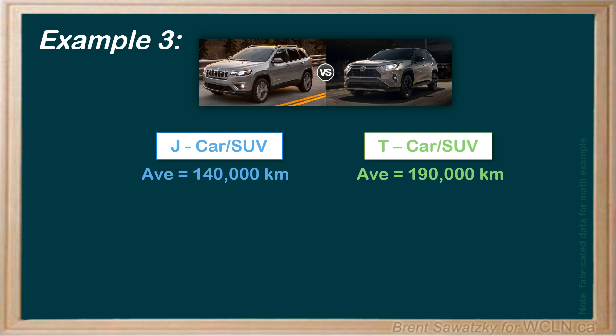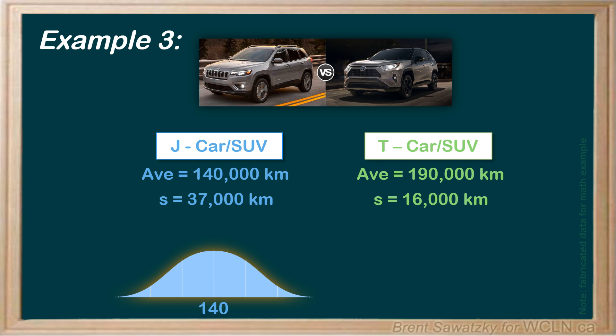Looking at standard deviations, we're considering a sample of this set, so s is our symbol, and we see that the standard deviation for car J was 37,000 kilometers, well, the standard deviation for car T was 16,000 kilometers. So what can this tell us?